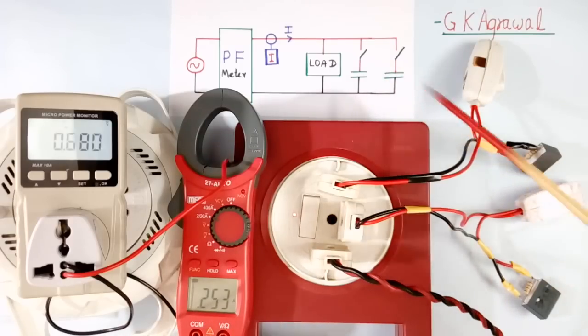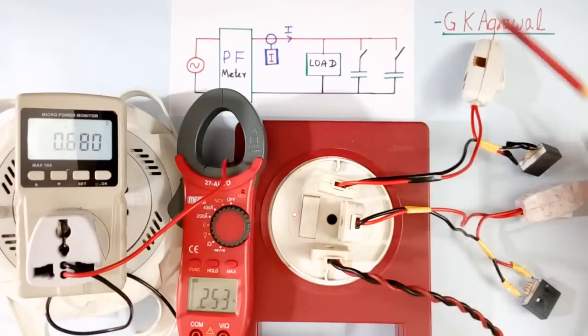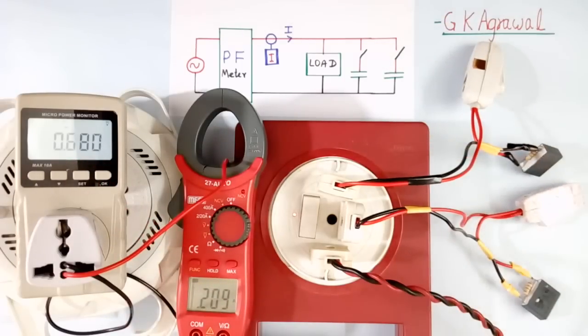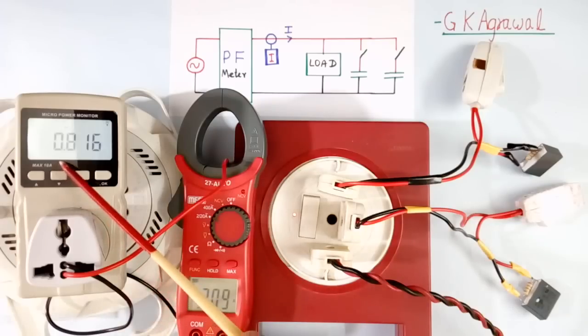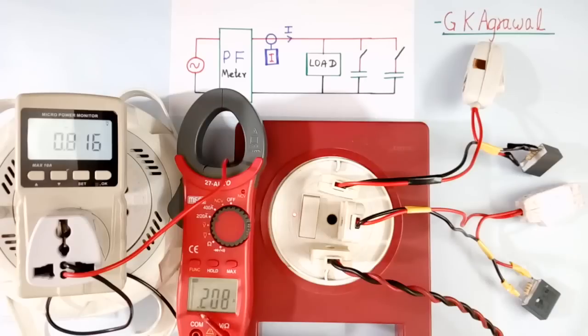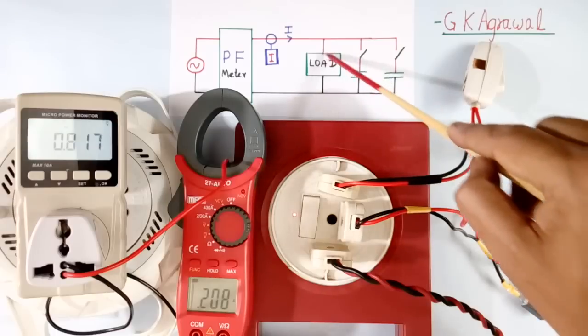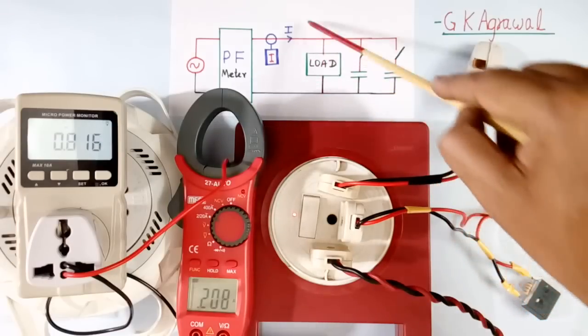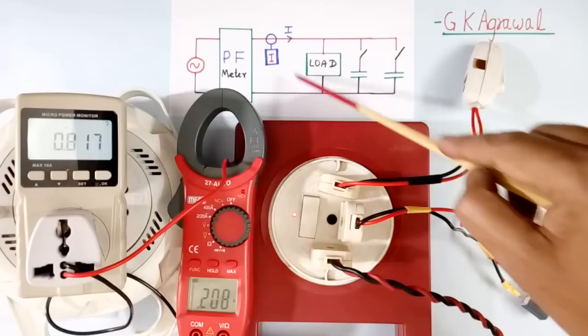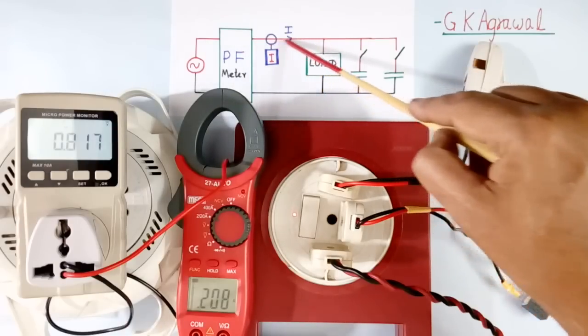Now I will switch on one more capacitor. It will improve further. See power factor has become now 0.81. And current has come down to 0.208. So by using this capacitor one by one, power factor of tubular load is improving. Here power factor is improving and here current is reducing.